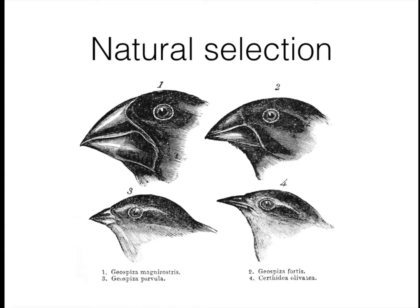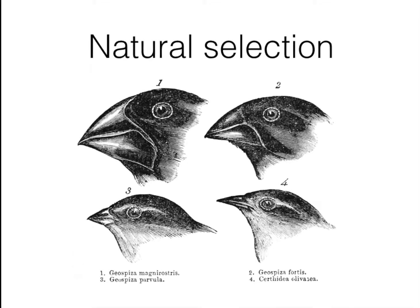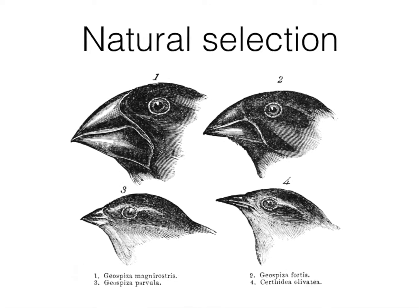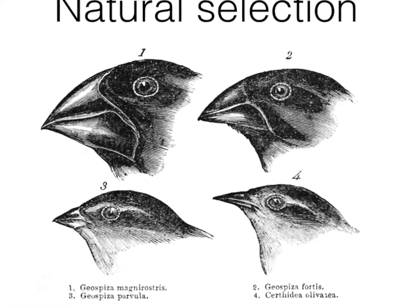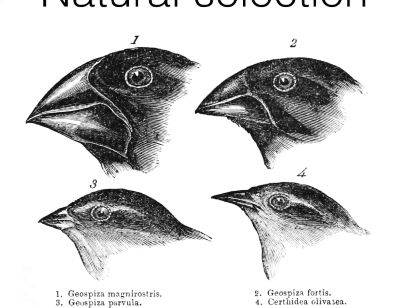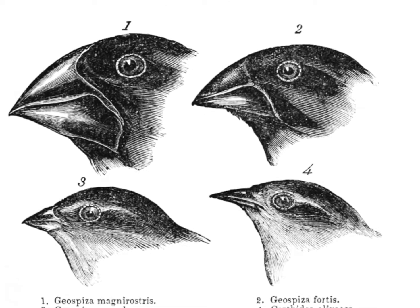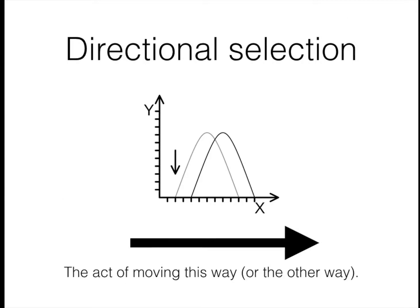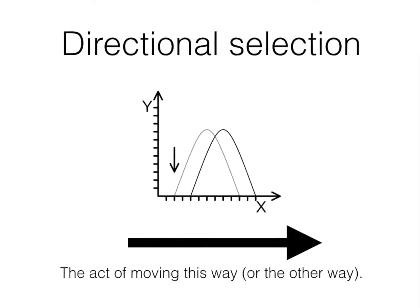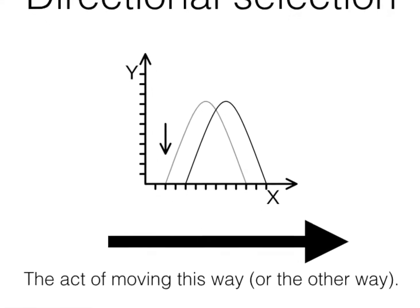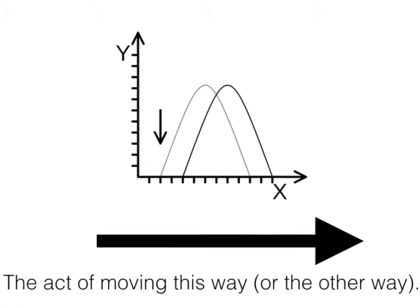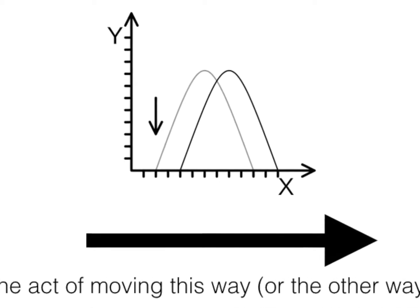Natural selection is another important idea that was created by Charles Darwin, and if you want to learn more about it, please click the link to another video about this very topic. There are three important types of selection. There is directional selection, where the population has its traits shift away from traits that are detrimental or harmful to survival.